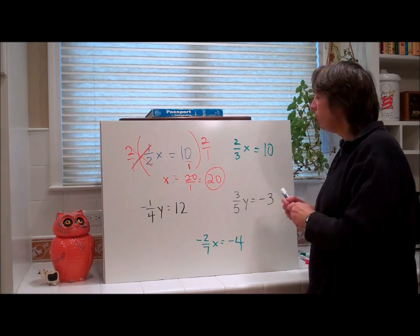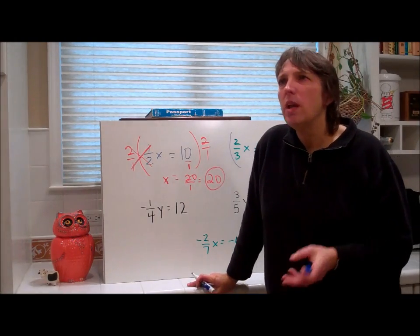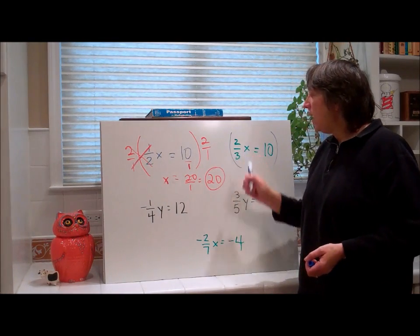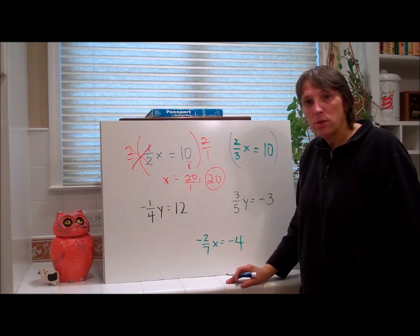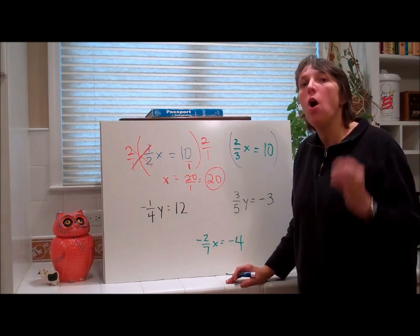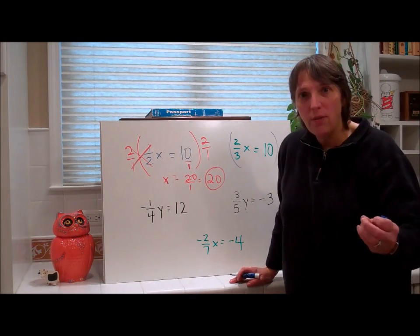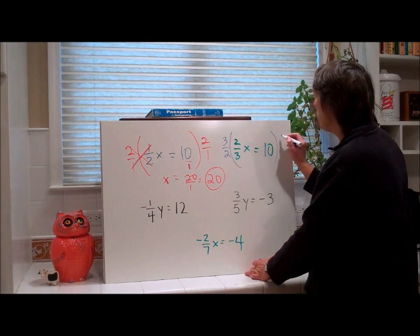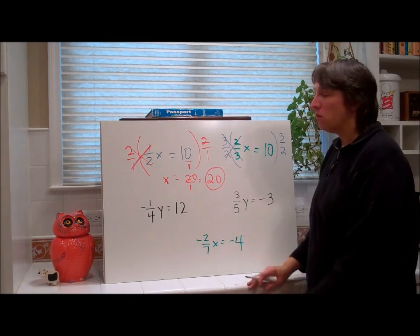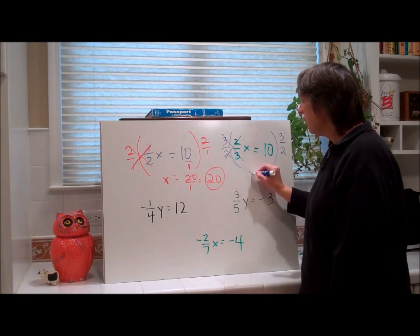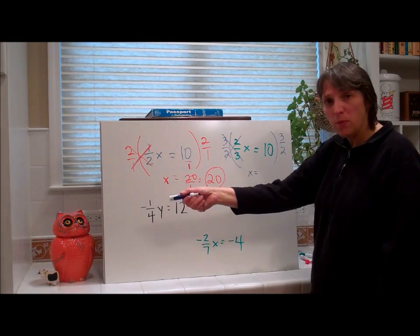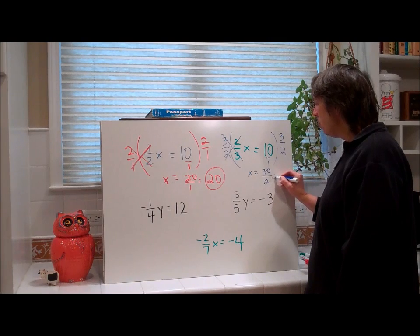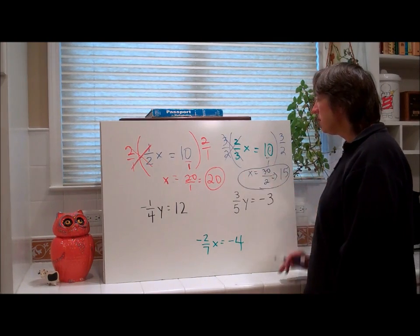Look at this one. Giant parentheses — we should automatically know. If x is being multiplied by 2 thirds, we know it's a fraction, we know we have to multiply by the reciprocal, and we know we need giant parentheses. What is the reciprocal of 2 thirds? 3 halves — just flip it upside down. These will always cancel because any number times its reciprocal is 1. Bring down the x. This is 10 over 1, so 10 times 3 is 30 over 2, which is 15. x equals 15.